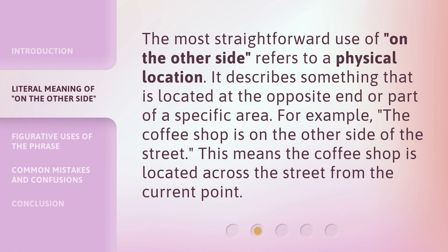The most straightforward use of 'on the other side' refers to a physical location. It describes something that is located at the opposite end or part of a specific area. For example, 'the coffee shop is on the other side of the street.' This means the coffee shop is located across the street from the current point.